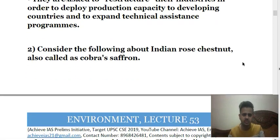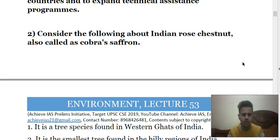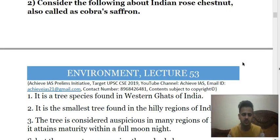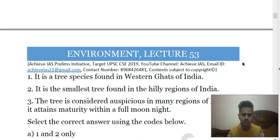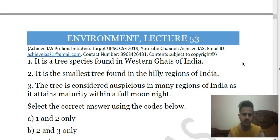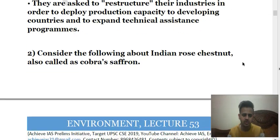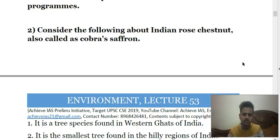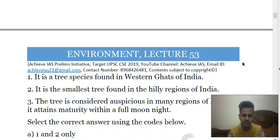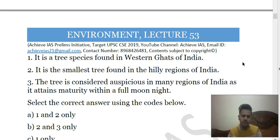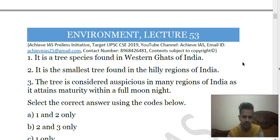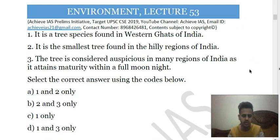Second question: consider the following statements about Indian rose chestnut, also called cobra's saffron. First, it is a tree species found in the Western Ghats of India. Second, it is the smallest tree found in hilly regions of India. Third, the tree is considered a species that attains maturity in a full moon night. Only the first statement is correct — it is indeed found in the Western Ghats. It is not the smallest tree; it can reach a height of 30 meters and its growth is not overnight.